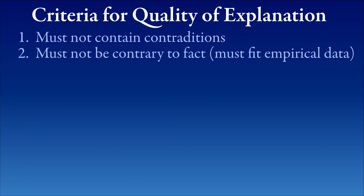First of all, there are two falsifying criteria. If an explanation contains any contradictions, it must be false, because no contradiction can be true. And if an explanation is contrary to fact, then also it must be false. When I say fact, I mean empirical fact. In science, this means that an explanation must accord with empirical data, with empirical science. If it requires empirical science to be wrong, then the explanation is false. Occasionally experimental data is wrong because of experimental error, but that's very rare.